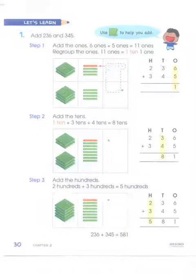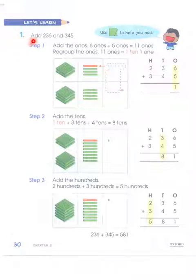Okay, we start page number 30. On page 30 we have this problem: we have to add 236 and 345.